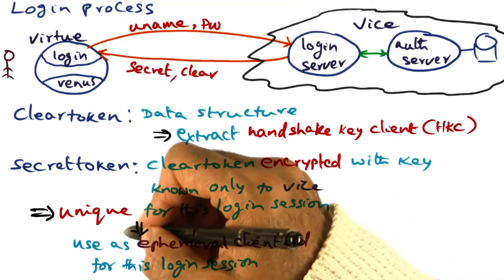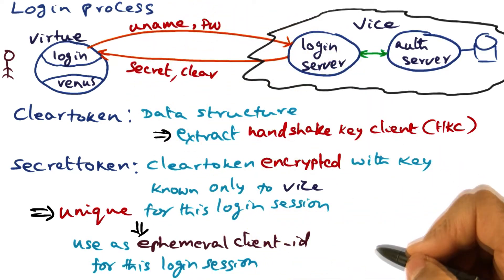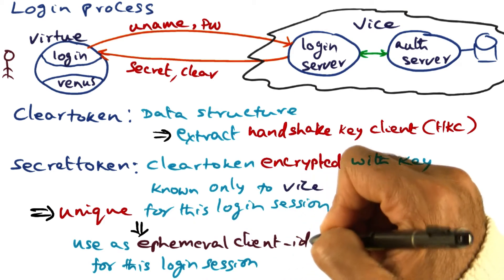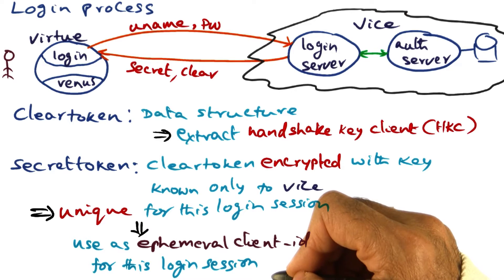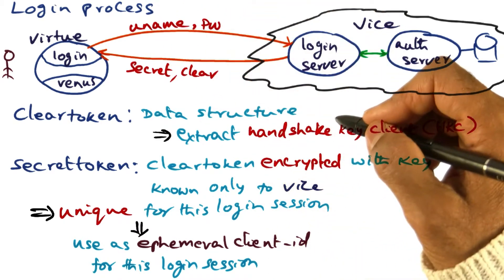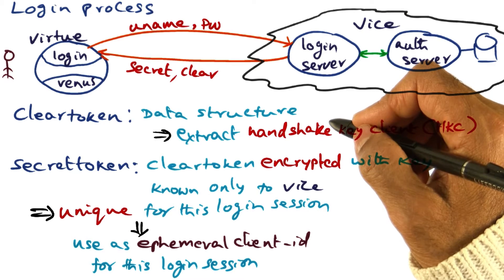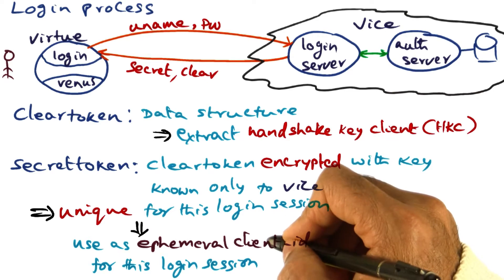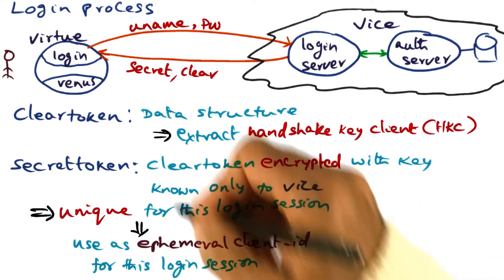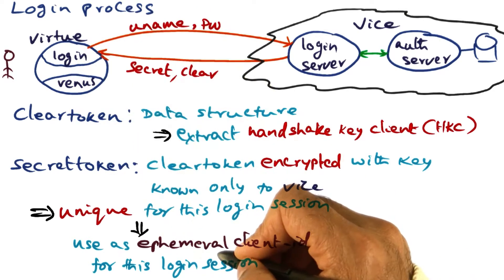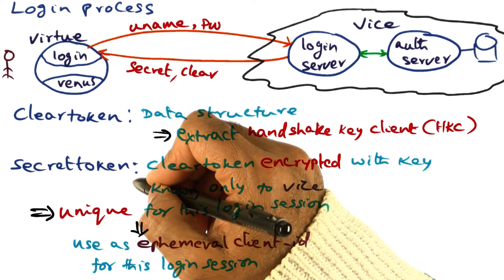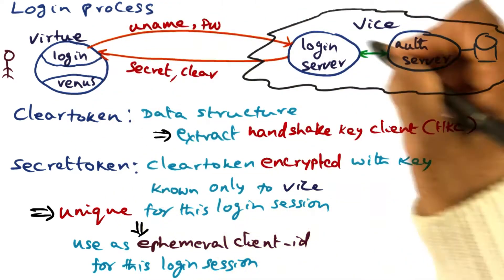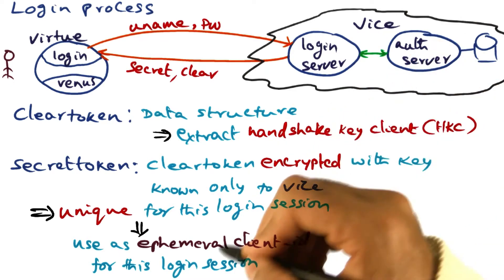We can use this bit string that the secret token represents as the ephemeral client ID for this login session. We don't want to expose the username and password too often on the wire. This is Andrew's answer to dealing with that problem — providing an ephemeral client ID for this login session. Once a user is logged in, they get an ephemeral client ID, which is the secret token, and this can be used in future communication between Virtue and Vice as the client ID.